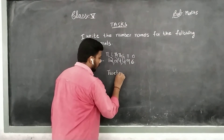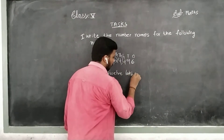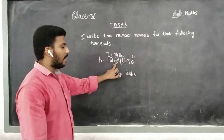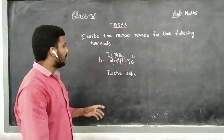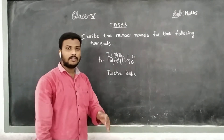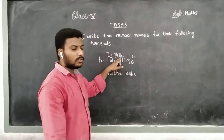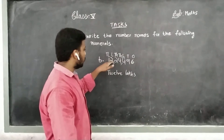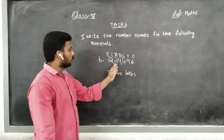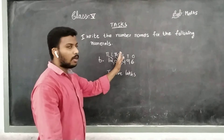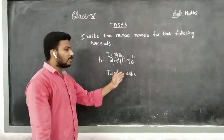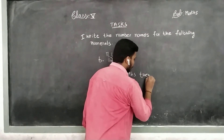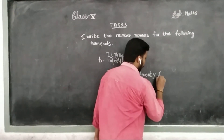Twelve lakhs. In the place of ten thousands we have the value 2. 2 into 10,000 — how much? 20,000. Again we have one more thousand value: 4 into 1,000 — how much? 4,000. Right now we have to combine both thousands: 20,000 plus 4,000 — we get the overall value as 24,000.